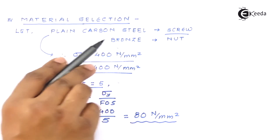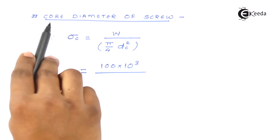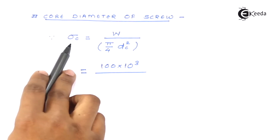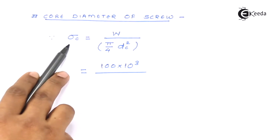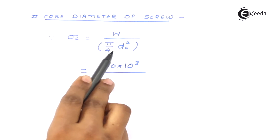We will select the material properties for the nut subsequently — it is bronze as mentioned. Now we move to the first design parameter: the core diameter of the screw. Since the screw withstands compressive load, the compressive strength equals the load divided by the cross-sectional area. For the threaded part, we use the core diameter for strength calculations, so the formula is W divided by the core area.